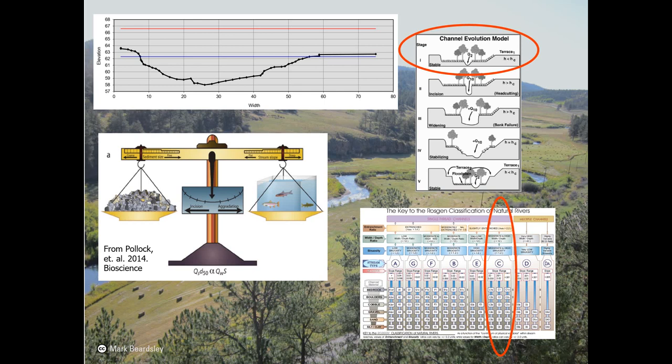I shouldn't have said that natural channel design aims to create static equilibrium channels instead of healthy riverscapes — it's actually that our generation really believed that static equilibrium channels were healthy riverscapes. We were taught that healthy natural rivers inherently strive for equilibrium and that restoring equilibrium was our way of helping them. I call this the natural equilibrium paradigm, and it dominated for decades.